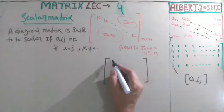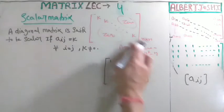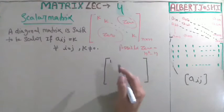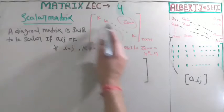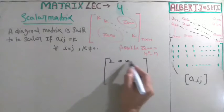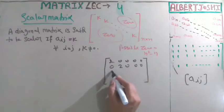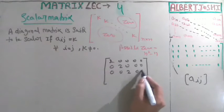This will be the same every time. Because we have written k, I am writing here suppose 2. Then 0, 0, 0, 0, 0. Then after that 0, 2, 0, 0, 0. It must be a square matrix also. 0, 0, 2, 0, 0. Then 0, 0, 0, 2, 0.